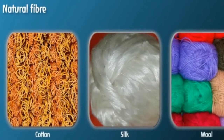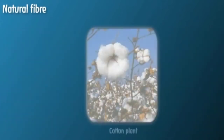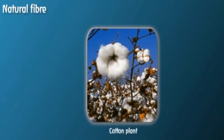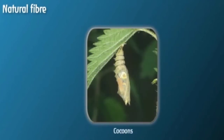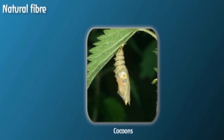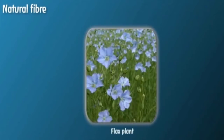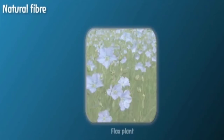Natural fibers — cotton, silk, and wool — are natural fibers. Cotton fiber is obtained from cotton plants. Silk is obtained from cocoons that the caterpillar of the silkworm weaves around themselves. Linen is obtained from the flax plant, and we get wool from sheep.